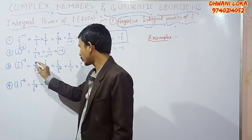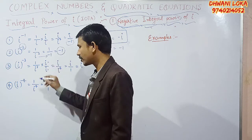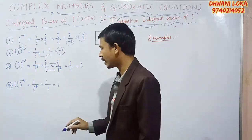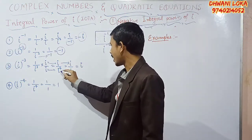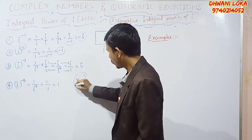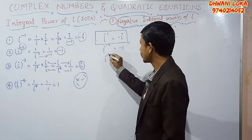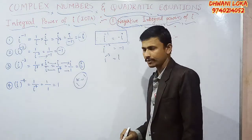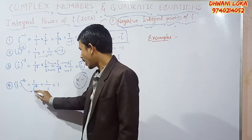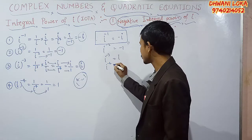For i to the power minus 3: write it as 1 divided by i cubed, then multiply numerator and denominator by i. The numerator is i, the denominator is i cubed into i which is i to the power 4 equals 1. So i divided by 1 equals i. Therefore i to the power minus 3 equals i. For i to the power minus 4: write it as 1 divided by i to the power 4. i to the power 4 is 1, so 1 divided by 1 equals 1. Therefore i to the power minus 4 equals 1.